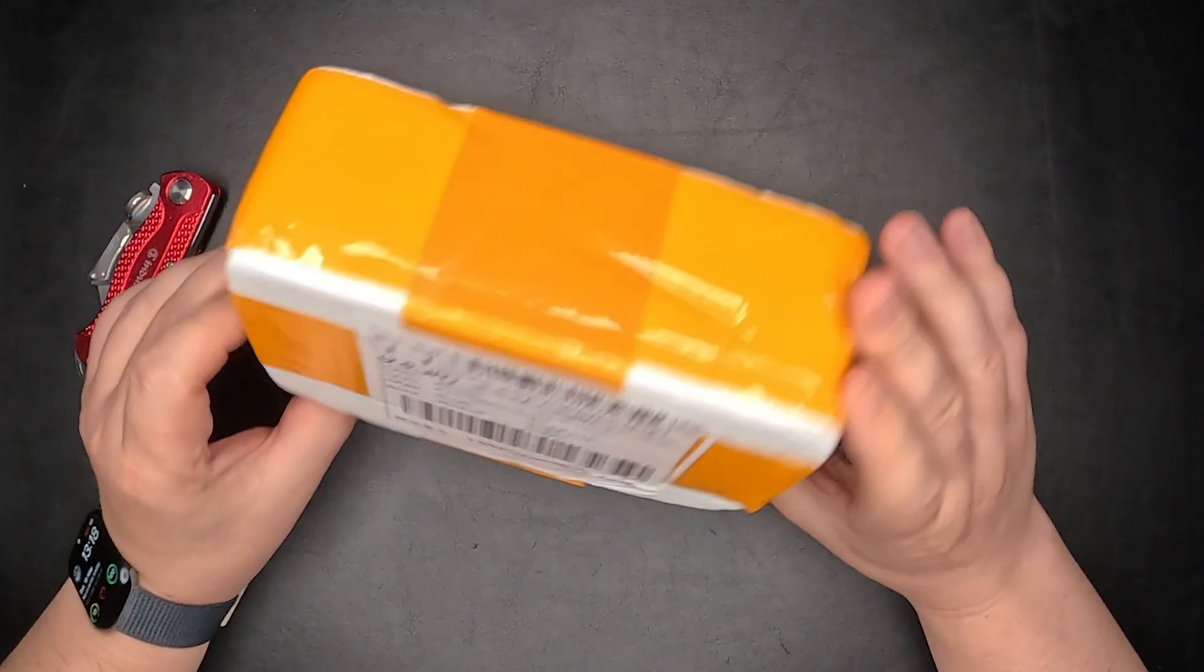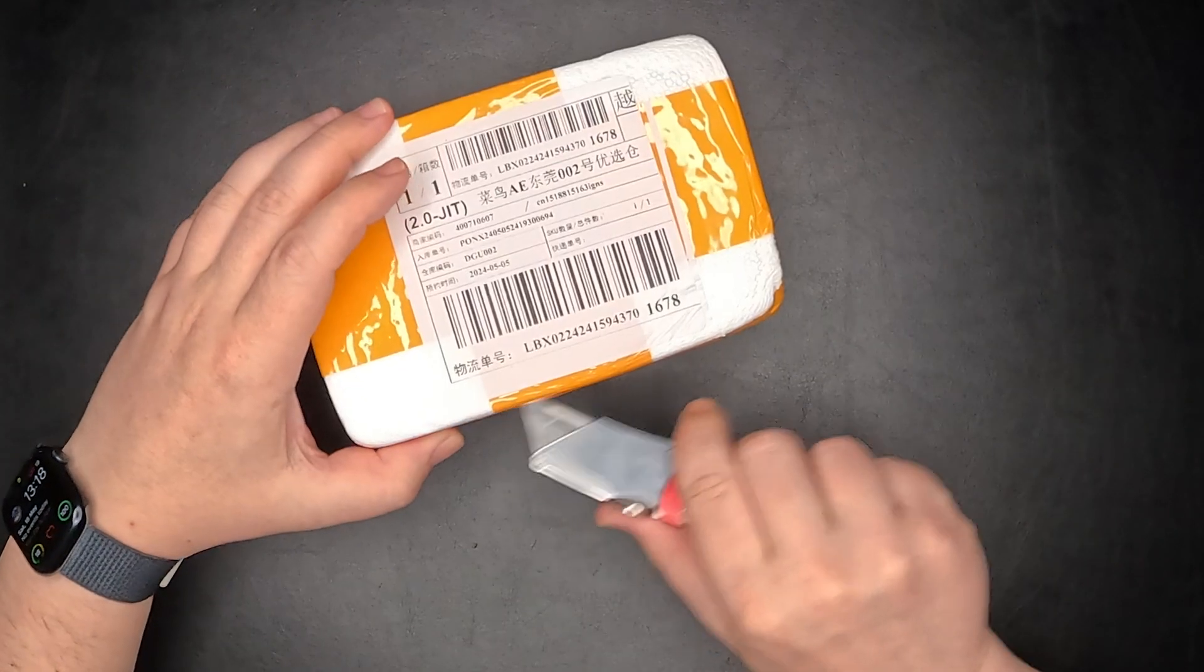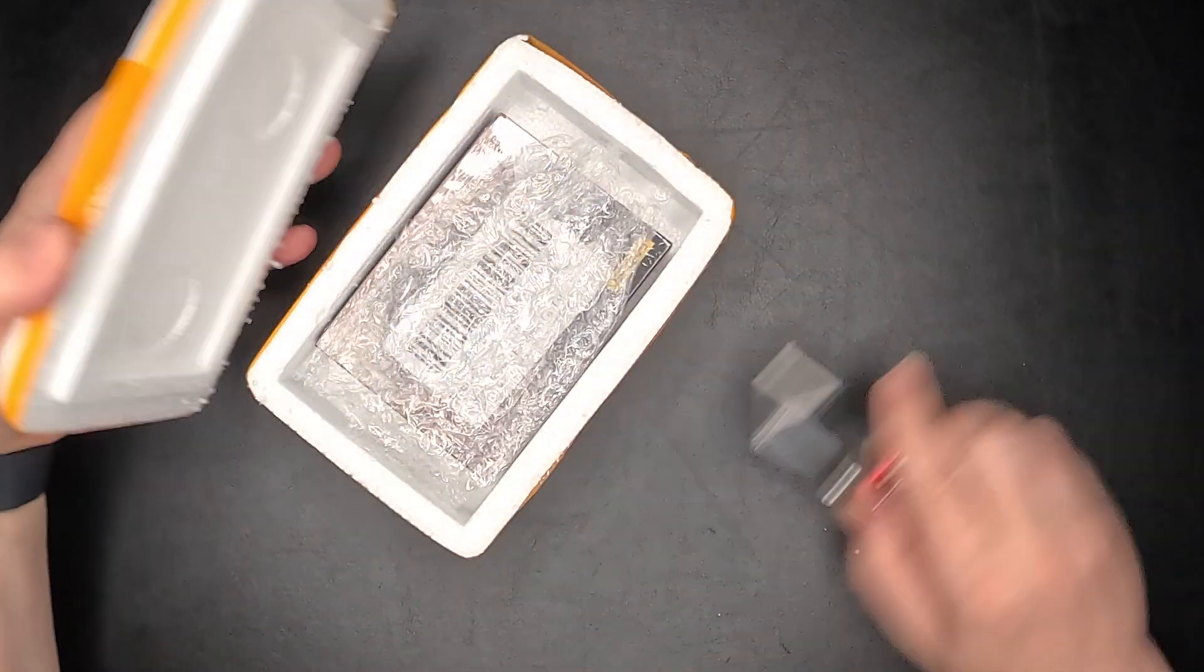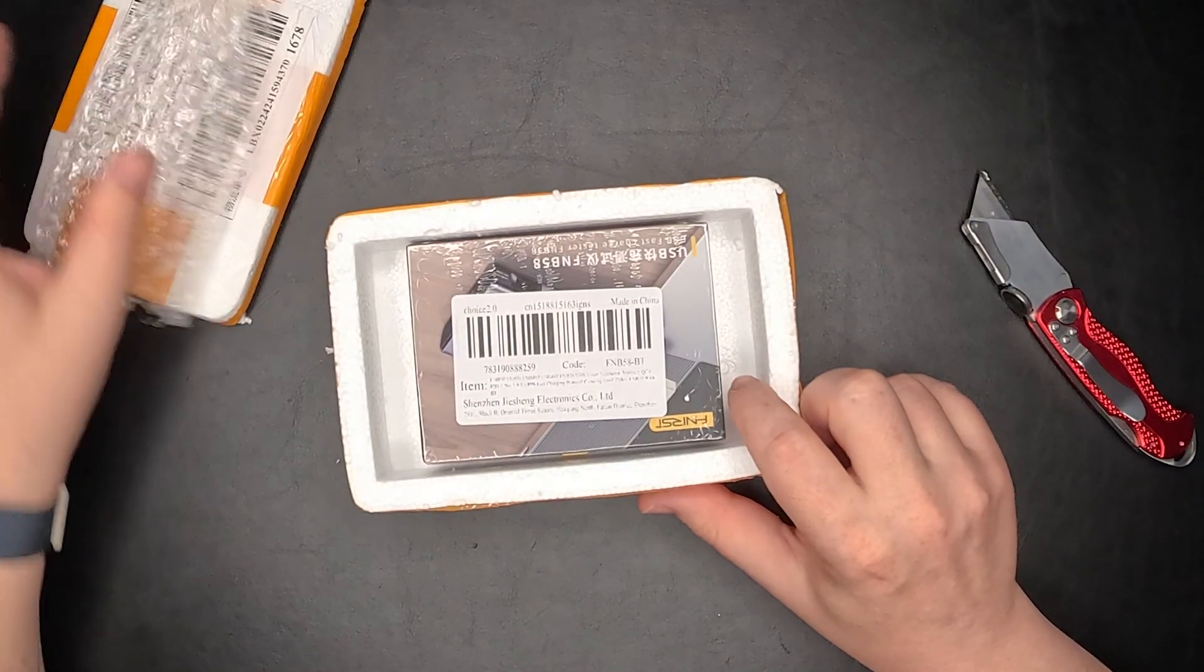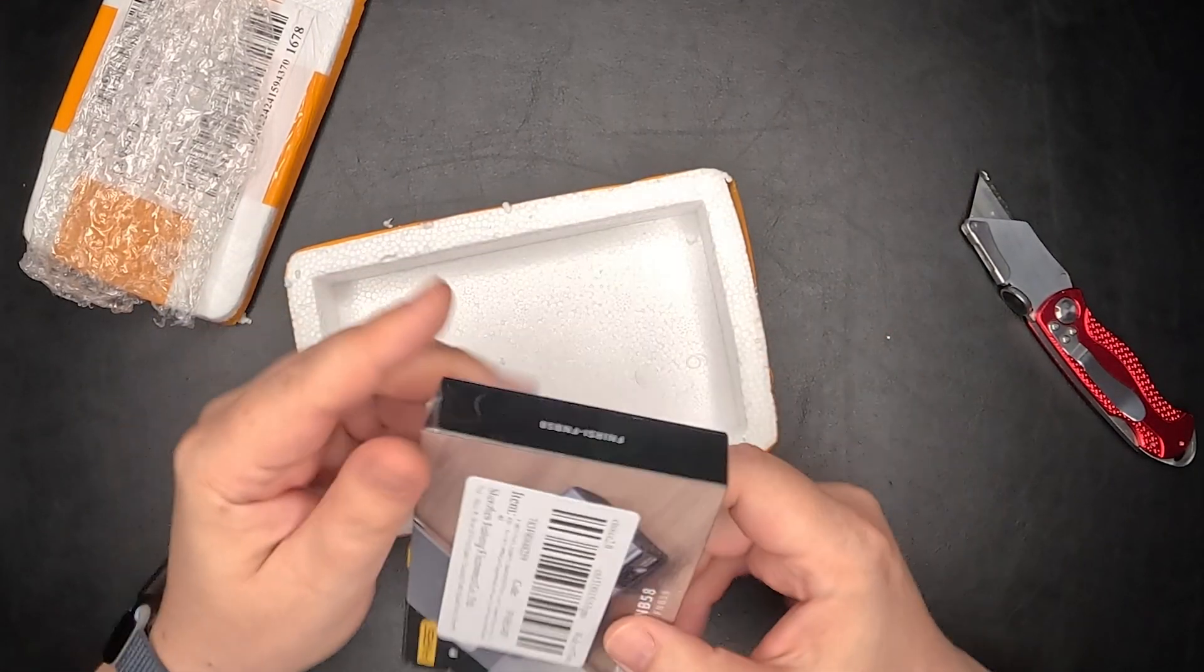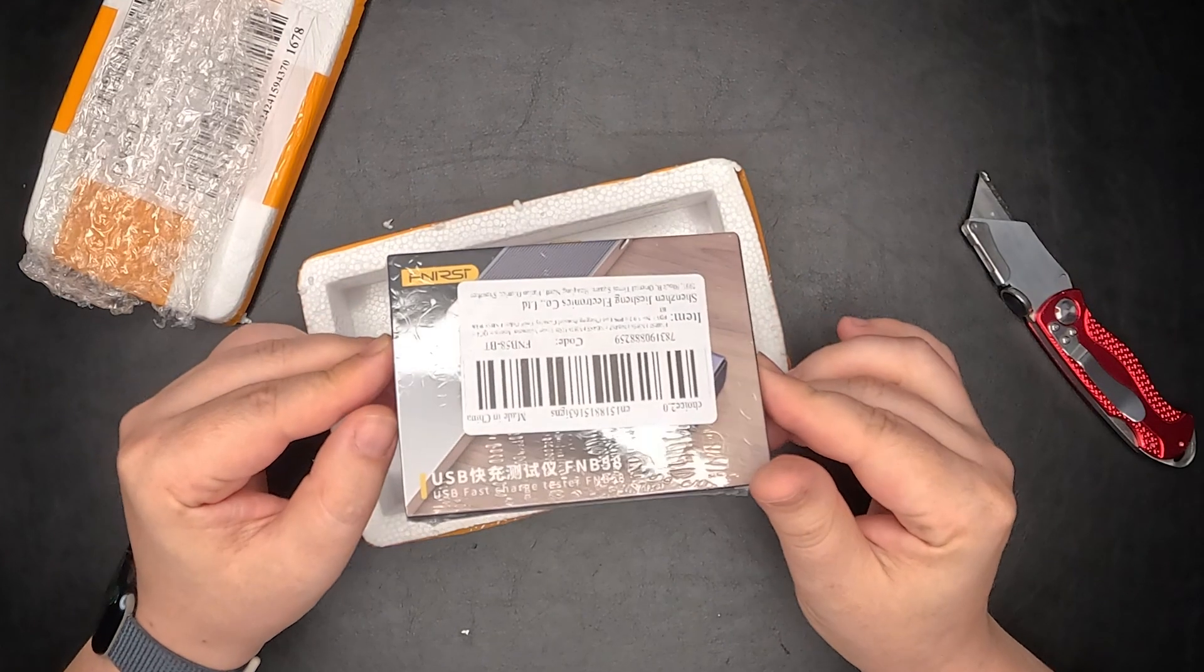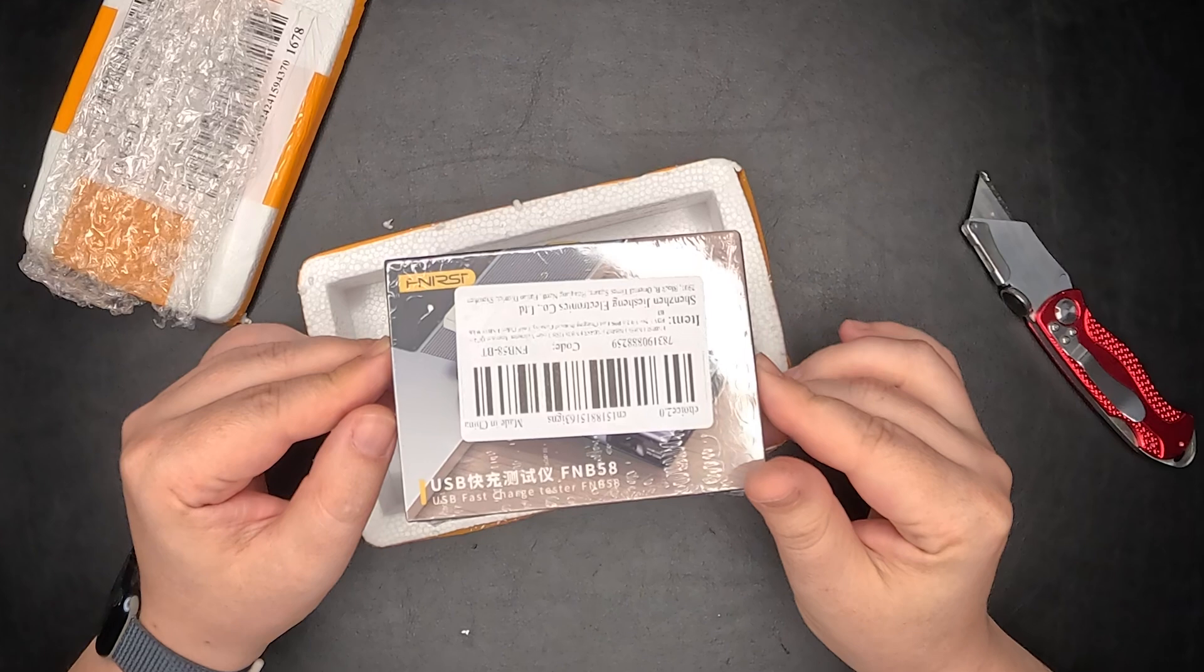So let's open it together. Cut it around. All right. Some other protection, and this is the device itself. I don't actually know how to pronounce this. I think it's NILLC USB tester model FN-B58.